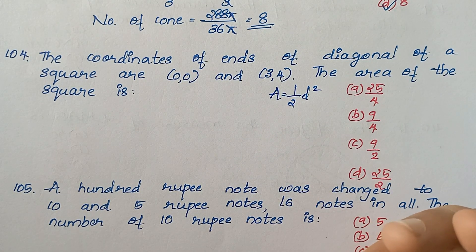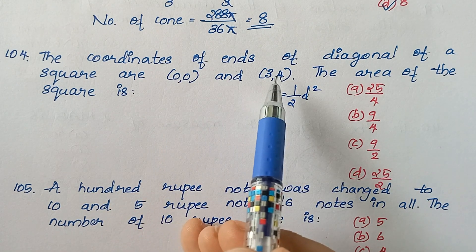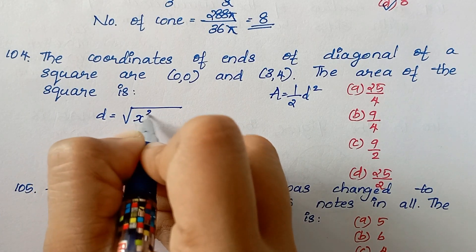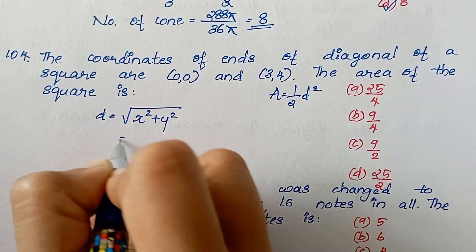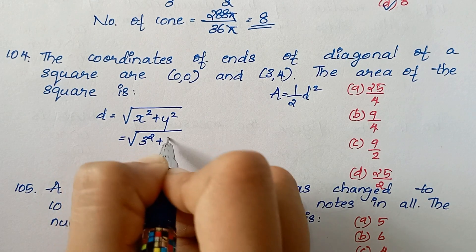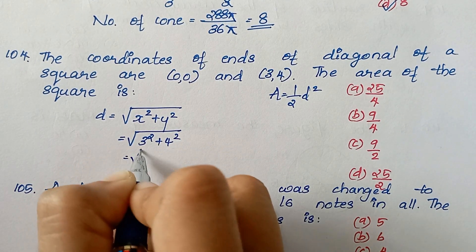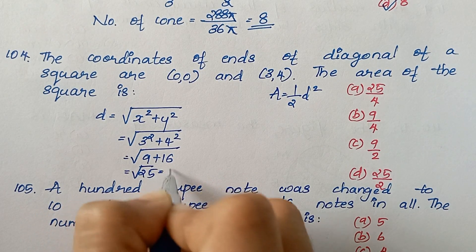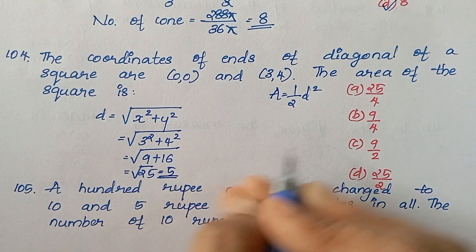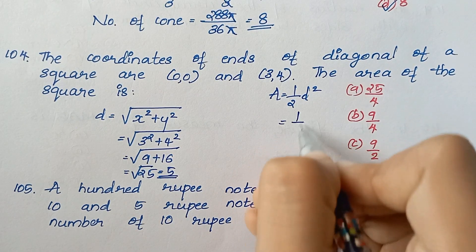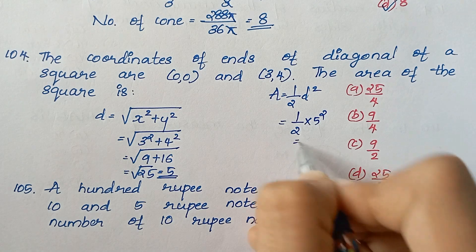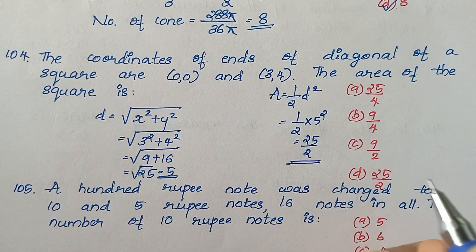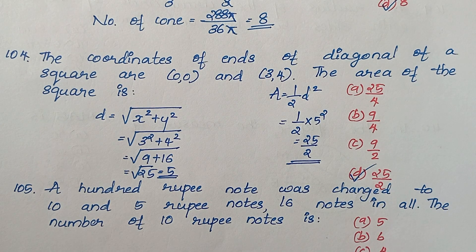We find the distance between the two points. The diagonal length d = √(3² + 4²) = √25 = 5. Area = ½ × d² = 25/2. That is the right answer.